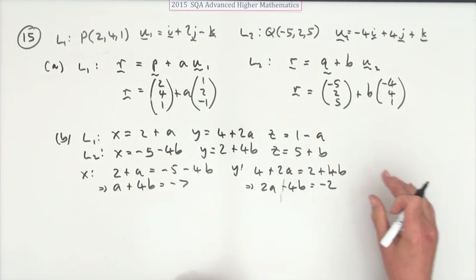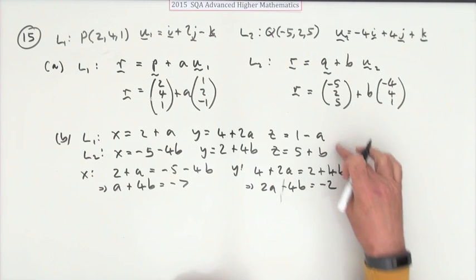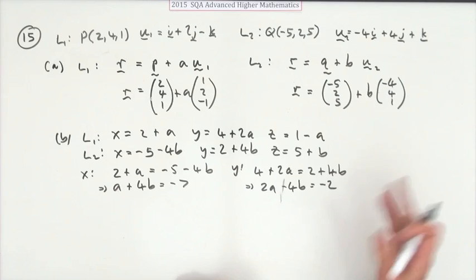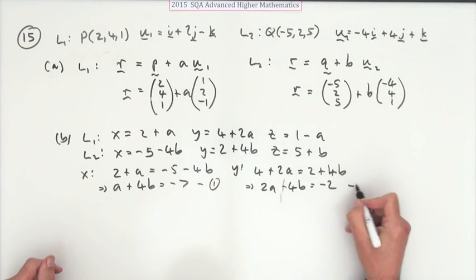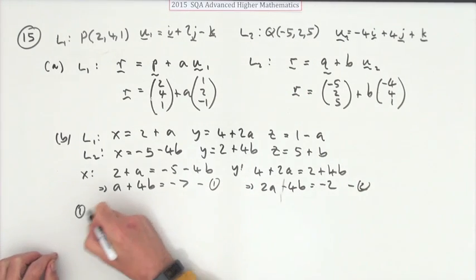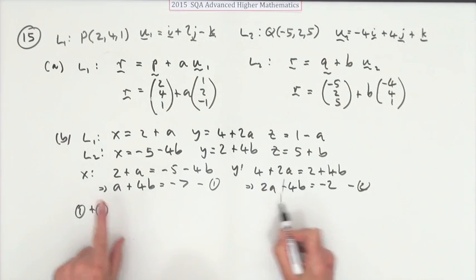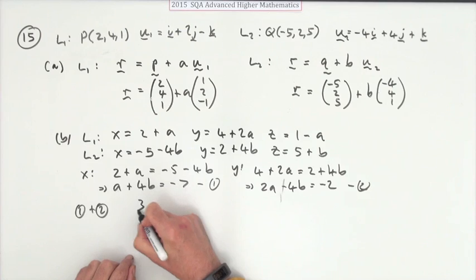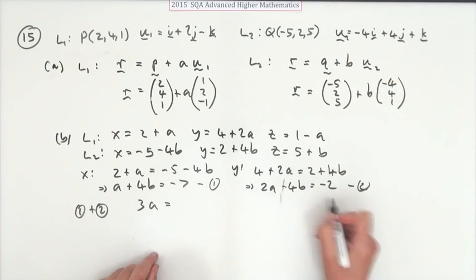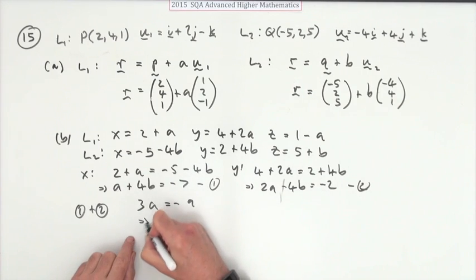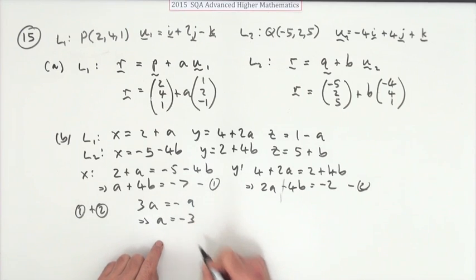Now, you could do the same for z in order to test it, but you can test it just by finding its coordinates, because that's what you want anyway. Right. So, if I call that 1 and I call that 2, if I just do 1 plus 2, then I'll have a and 2a makes 3a. 4b minus 4b disappears. A negative 7 and a negative 2 makes a negative 9. That gives me a parameter of negative 3.